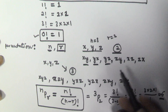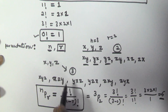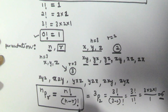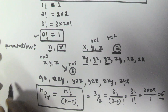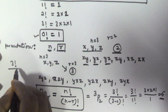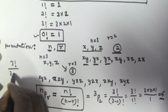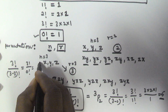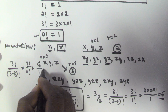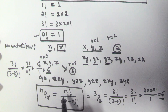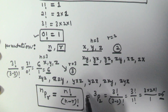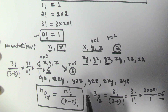Those 6 arrangements we listed are confirmed. Now if n equals 3 and r equals 3, then 3P3 equals 3 factorial divided by (3 minus 3) factorial, which is 3 factorial divided by 0 factorial. That is 6 divided by 1, which equals 6. So again we get 6 arrangements. I hope you understood. Thank you for watching, please subscribe to my channel.